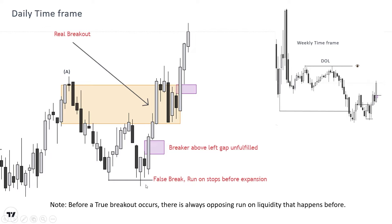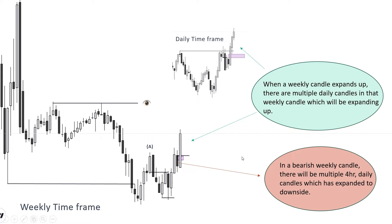Here is a small insight: before a true breakout occurs above any swing high, opposing liquidity gets run before that move. Why does opposing liquidity usually get run before a true breakout? This opposing liquidity removes people who are longed in these candles. When the long stops are hit under this low, they are converted into market sell orders which are paired with smart money buy limits below this swing low.